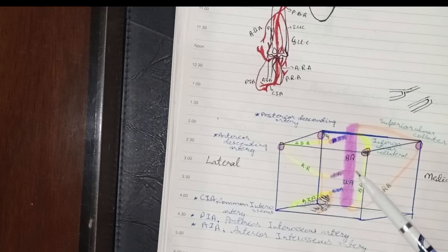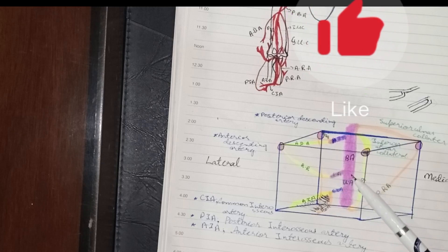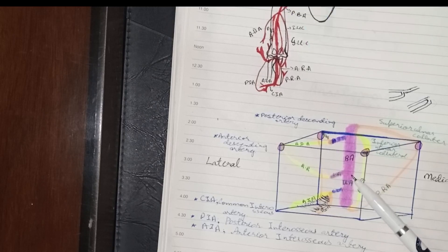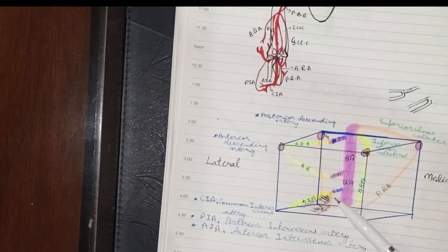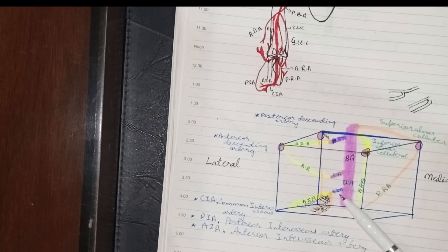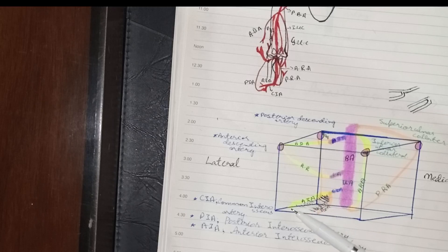To repeat: the brachial artery divides into a small lateral radial artery and a large medial ulnar artery. The ulnar artery gives off the common interosseous artery — CIA — which divides into the posterior interosseous artery (PIA) and the anterior interosseous artery (AIA).